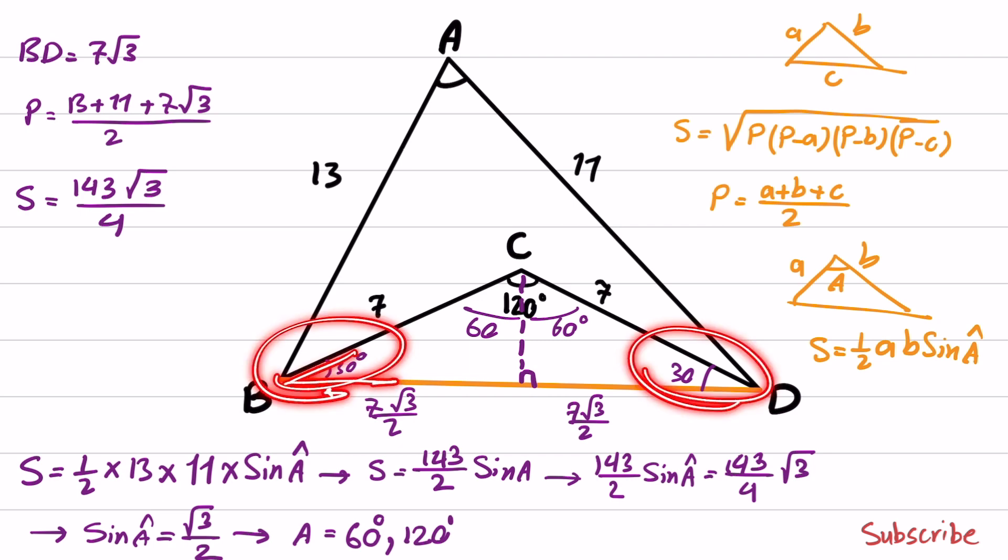But we already have 60 inside these two. The summation is definitely greater than 60, therefore 120 is not acceptable.